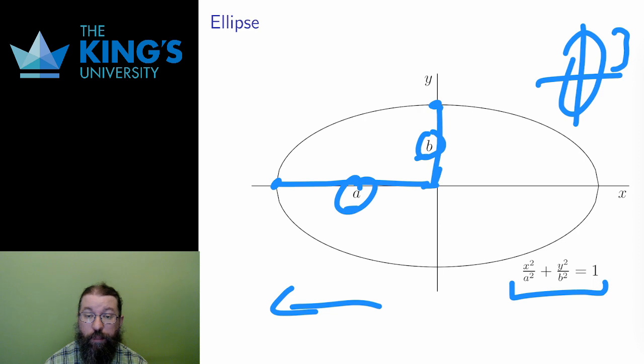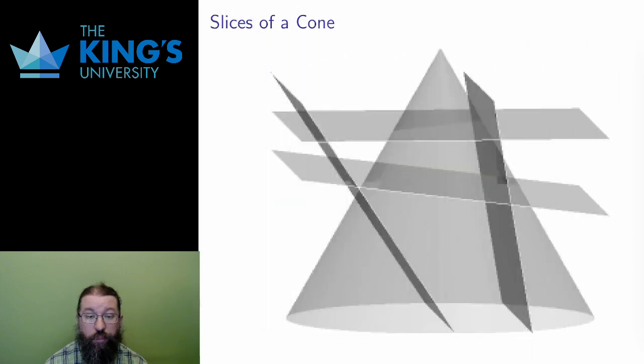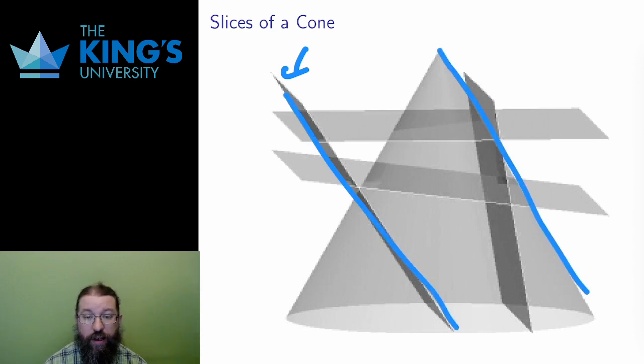The third conic is the parabola. Other than the circle, this is probably the most familiar, since the parabola is also the graph of a quadratic. As a slice, the parabola comes from a slice that perfectly matches the angle of the cone. It's this slice in the diagram.